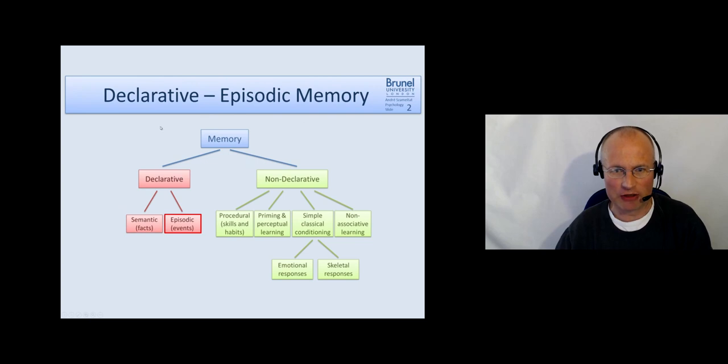So we are in our schema square, we're still in declarative memory. We talked about semantic memory and now we are turning to episodic memory.